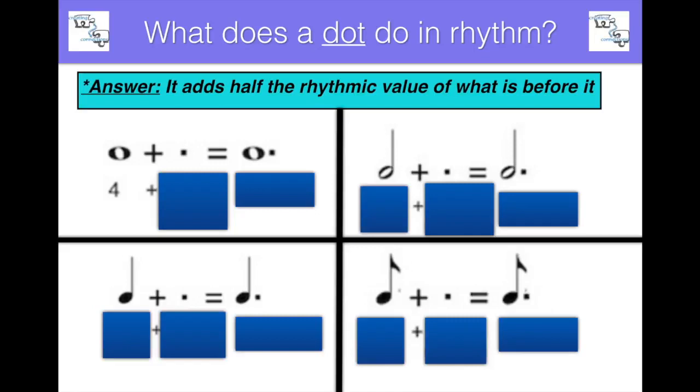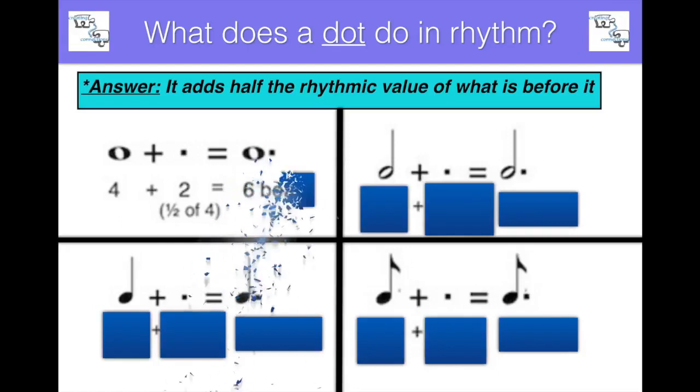The whole note is four beats, so half of four would be two. And four plus two equals six beats for the dotted whole note.